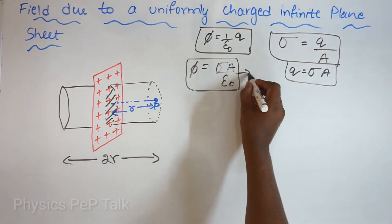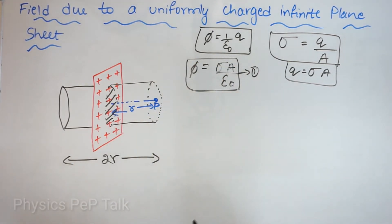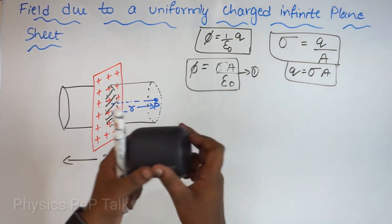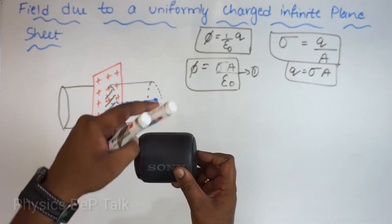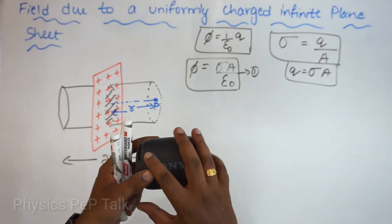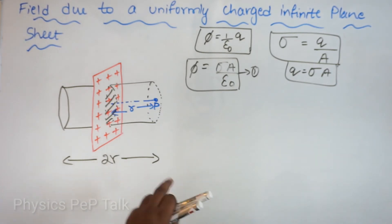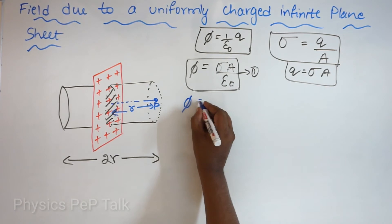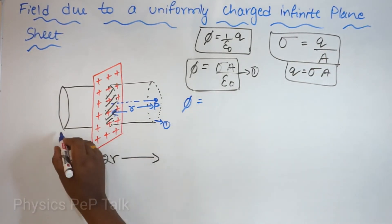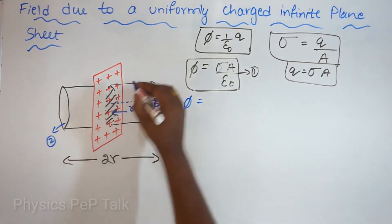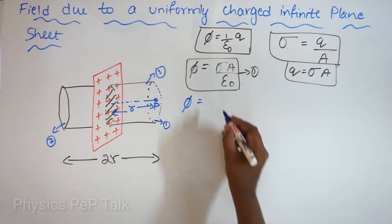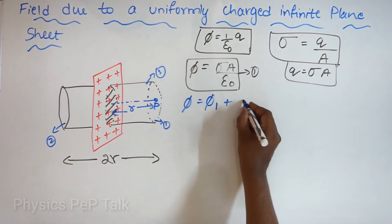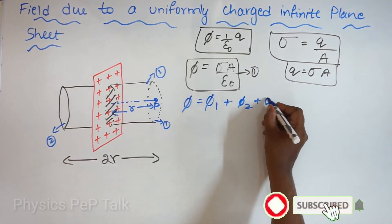Now for the electric flux through the faces of this cylinder: I will call the two flat faces region 1 and region 2, and the curved surface region 3. The total electric flux through this cylinder is flux through region 1 plus flux through region 2 plus flux through region 3.